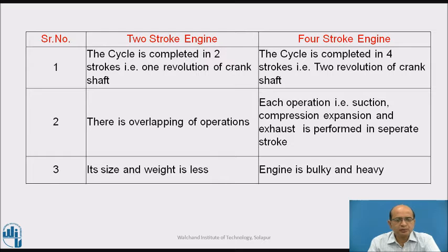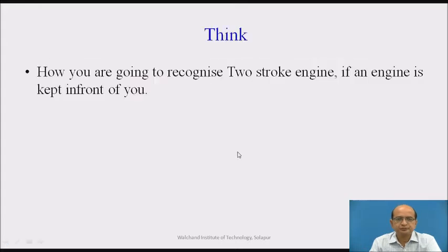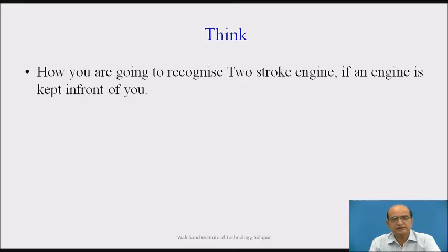To summarize these three comparison points: cycle completion requires two strokes or four strokes; there is overlapping of operations in two-stroke versus distinct operations in four-stroke; and size and weight is less for two-stroke and heavier for four-stroke. Now, if an engine is kept in front of you, we can recognize it by the valving system — if a valving system is available, it is a four-stroke engine; if not, it is a two-stroke engine.